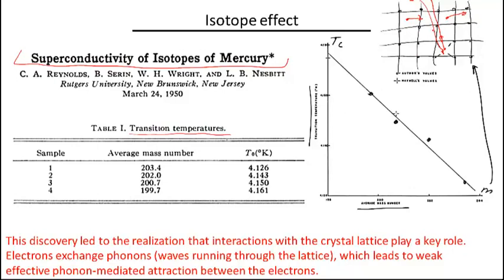Well, and by the way, for the model, for the actual solution I'm going to present, the origin of the attraction doesn't matter that much. It will be just some attraction, some constant, minus V0, but it's good to know the physics behind it.